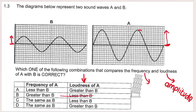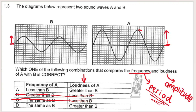Now looking at frequency: frequency is the number of waves passing a given point per second, and period is the time to complete one full wavelength. Looking at the blocks given, there are exactly the same number of blocks in B as in A. In B there are two complete wavelengths between the start and end points, and for A the same — one and two wavelengths. So the frequency and period of these waves are the same. That means this is the correct answer.